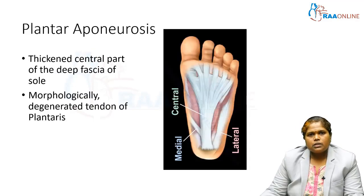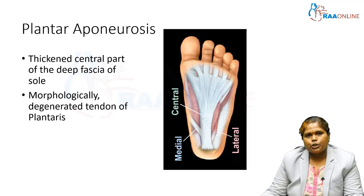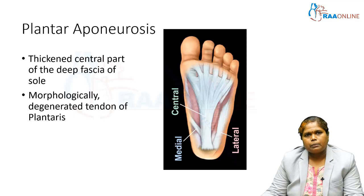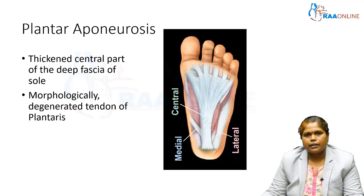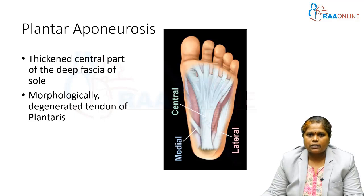Plantar aponeurosis is a thickened central part of the deep fascia of the sole. We have already seen the palmar aponeurosis in the hand, and it is similar — a thickened deep fascia. Morphologically, plantar aponeurosis is a degenerated tendon of plantaris, just as palmar aponeurosis is the degenerated tendon of palmaris longus.